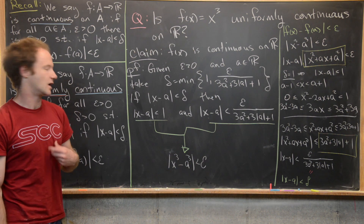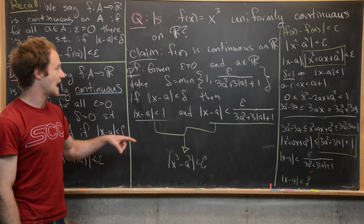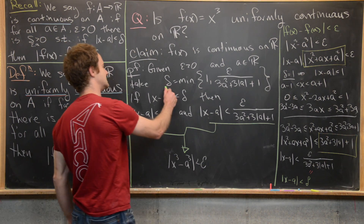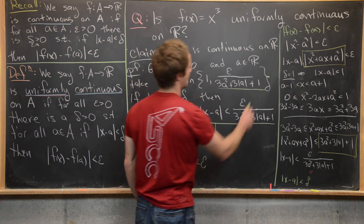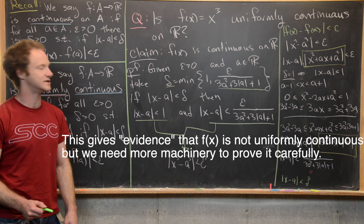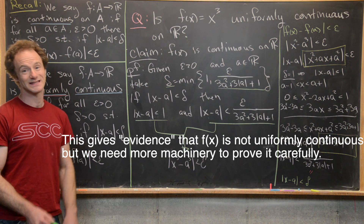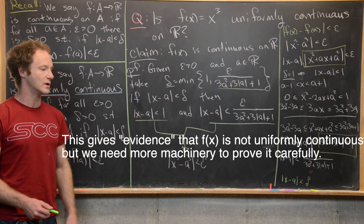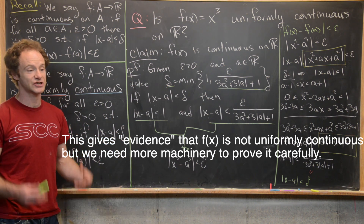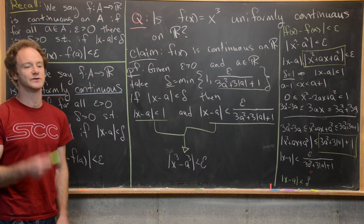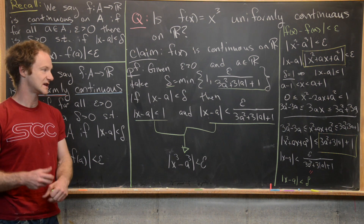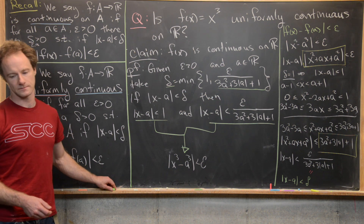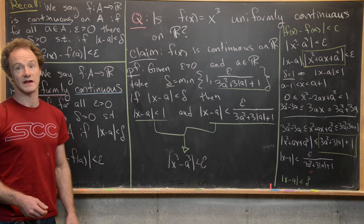Notice that this function is continuous on all of R, but the delta depends on whatever point you're testing continuity at, so this may not be uniformly continuous. We won't prove that here, but in the next video we'll carefully look at the condition for something to be — or not be — uniformly continuous, and we'll have a test for non-uniform continuity. And that's a good place to stop.